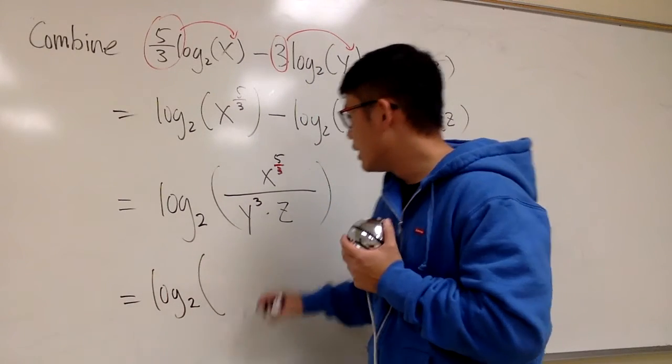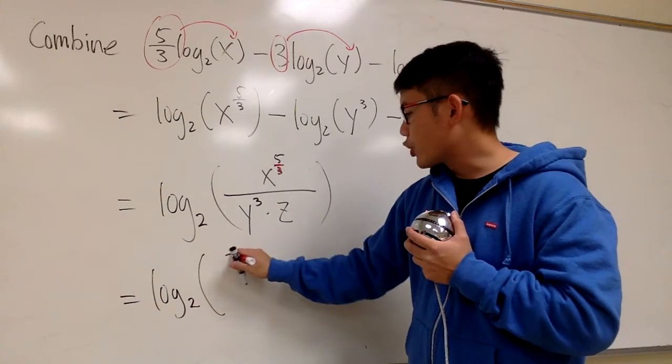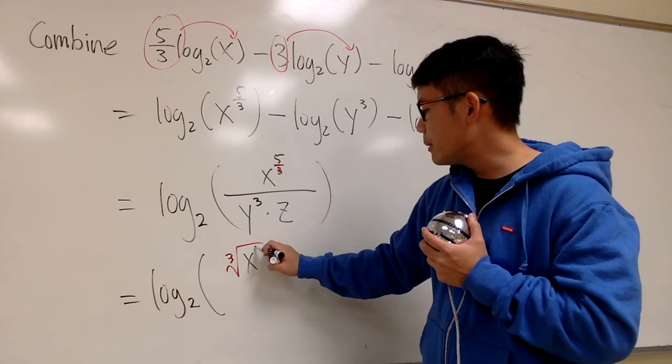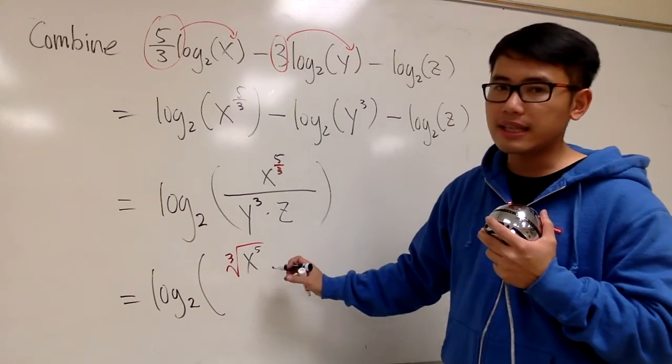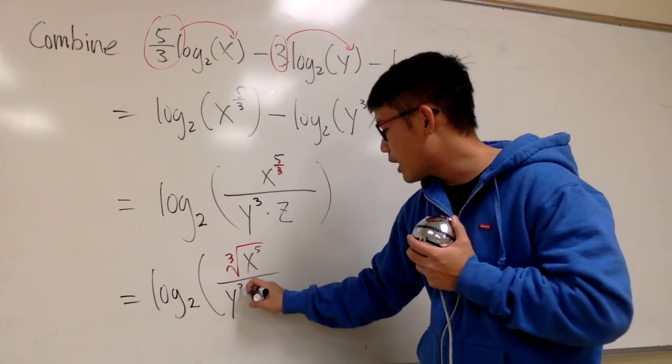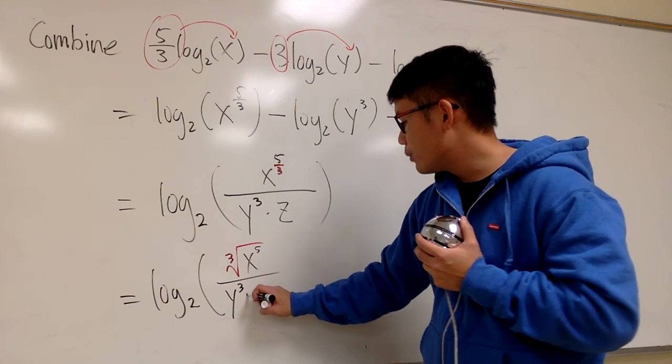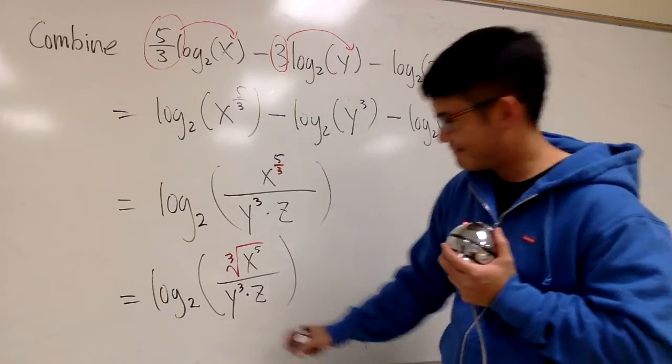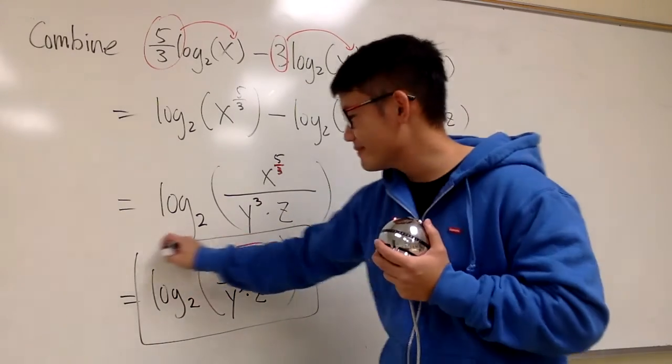Log base 2. So let me write down the cube root of x, and then the 5th power, let me put it inside along with the x, like this. And we will have y to the 3rd power, and multiplying with z in the denominator, like that. This is it.